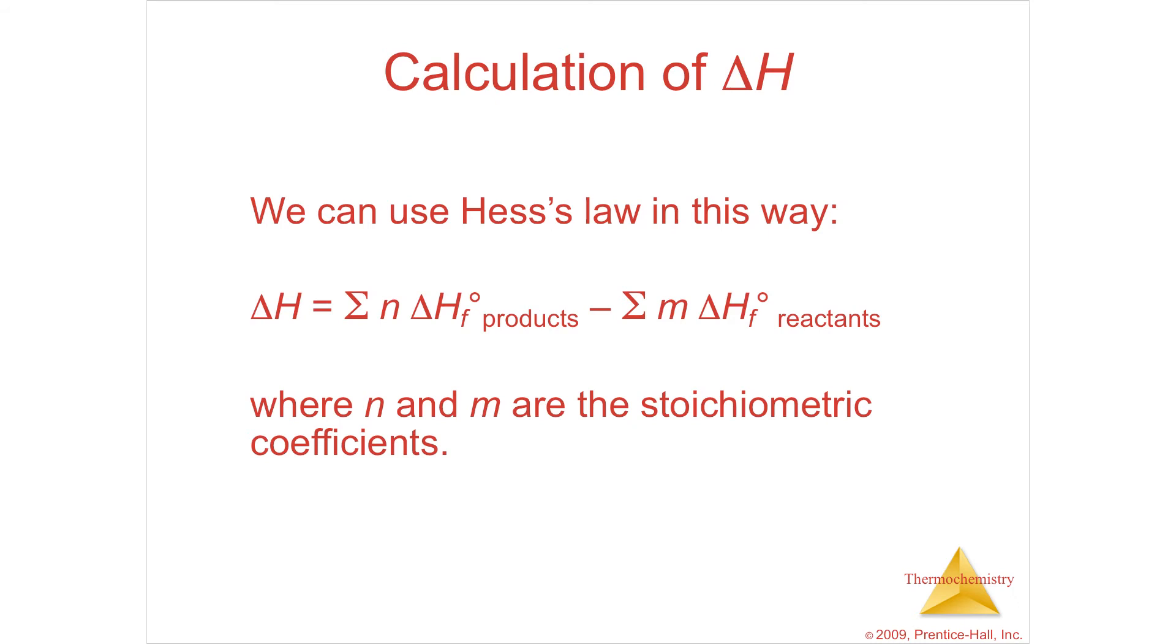Now, don't panic because there's Greek letters here. All this is saying is that you are going to add up, that's what the sigma means, you're going to add up all of the heats of formation of the products. So whatever the products are, look up in the book, how do you make that product from its constituents? Like, how do you make water from hydrogen and oxygen? Whatever it is. And then that number times what is the coefficient in the balanced equation? Add them all up, and then that's the products that's on the right. Then you're going to subtract, and then you're going to add up all of the heats of formation of the reactants times the coefficient in the balanced equation for that.